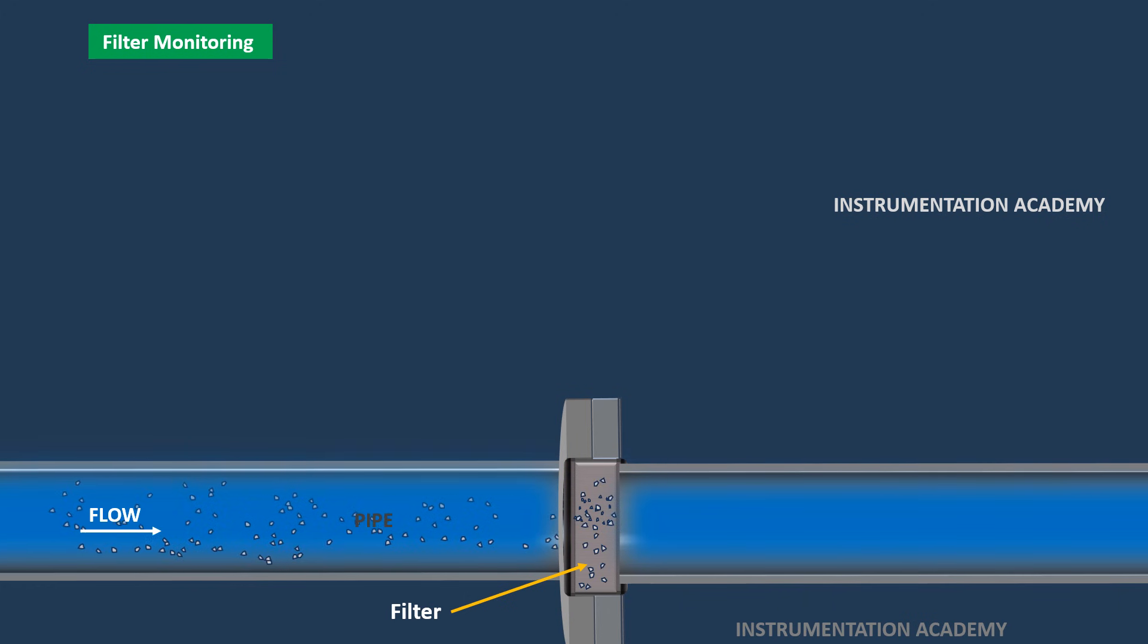Over time, as more particles are trapped, the filter becomes clogged, which increases resistance to flow and reduces the system's efficiency.